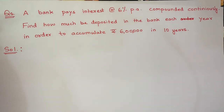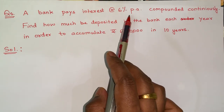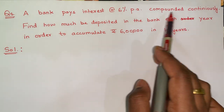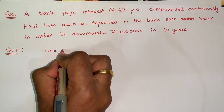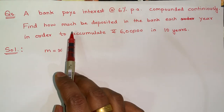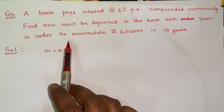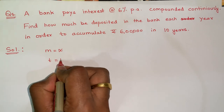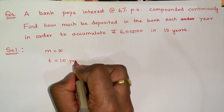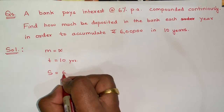Now let's do one more question. A bank pays interest at the rate of 6% per annum compounded continuously. Since it is compounded continuously, M equals infinity. Find how much must be deposited in a bank each year in order to accumulate ₹6 lakhs in 10 years. The time period is 10 years and the amount needed after 10 years is ₹6,00,000.